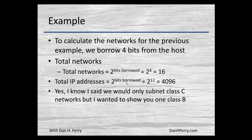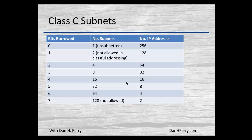I said we would do Class C's, and when we actually build our table we will, but I wanted to show you doing it with a Class B first. Here's an example of a Class C range when we borrow bits. If we don't borrow any bits, it's unsubnetted — there's just the one network and 256 IP addresses.